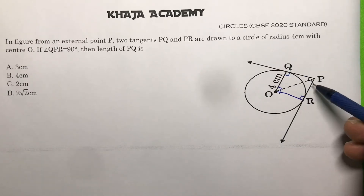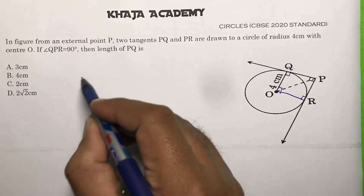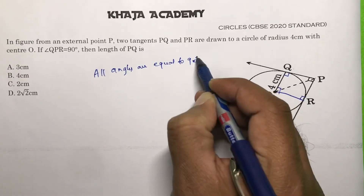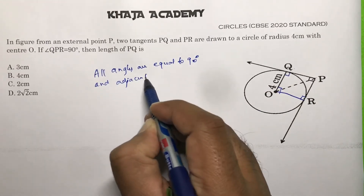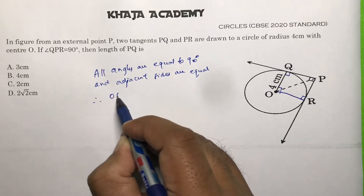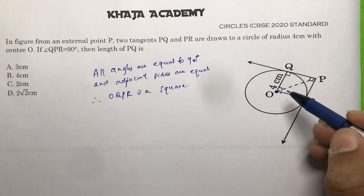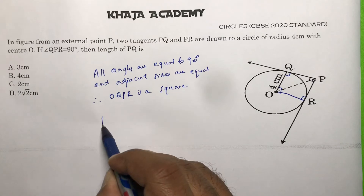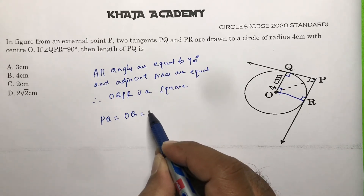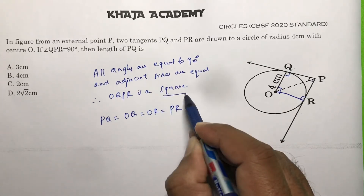Since all angles are 90° and adjacent sides are equal — PQ equals PR, and OQ equals OR — therefore OQPR is a square. If it is a square, then all sides are equal. Therefore OQ equals PQ, and since OQ is the radius which equals 4 centimeters, PQ is also equal to 4 centimeters.